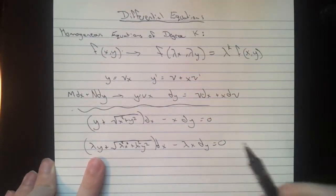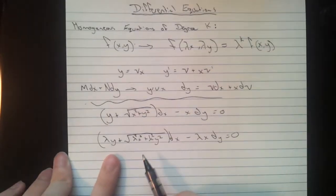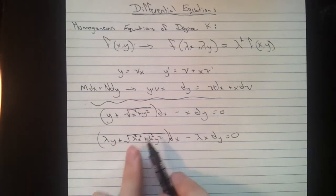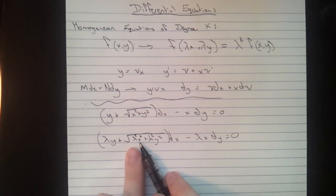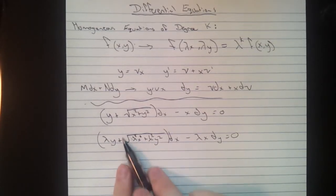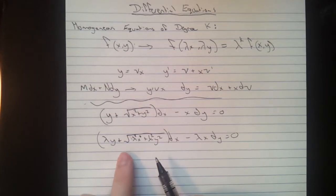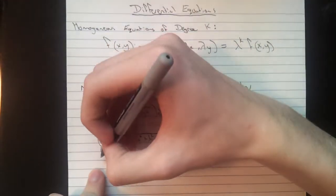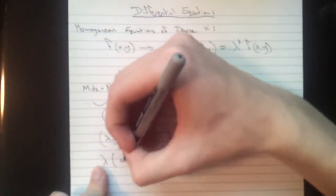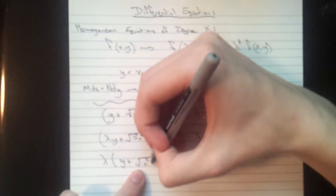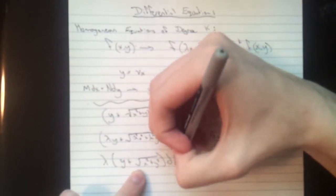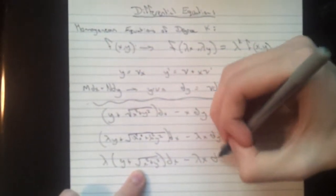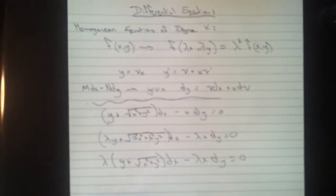So here we already have lambda x, we can't do anything with that. But here, these lambda squareds can be factored out, so you'll get lambda squared times x squared plus y squared. And you bring that out of the square root, it's just lambda, and you can pull that out here, and it separates out, you get lambda times y plus square root of x squared plus y squared dx minus lambda x dy equals zero. So here we have homogeneous of degree one. So we can go ahead and solve this.